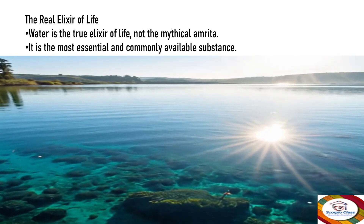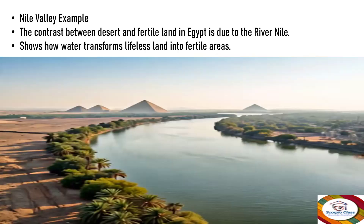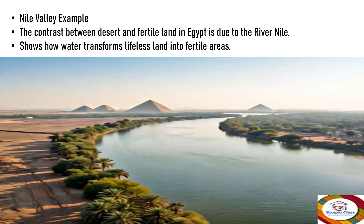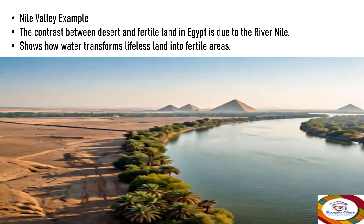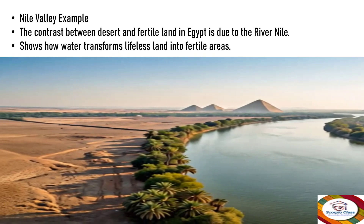C.B. Raman gives the example of the Nile Valley. River Nile, which is in Egypt, shows the contrast between desert and fertile land. This contrast is due to the River Nile — which is nothing but water. As you can see in the image, one side is desert land and the other side is fertile land, showing how water transforms lifeless land into fertile areas and adds beauty to nature.